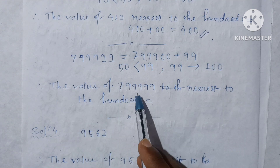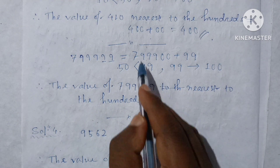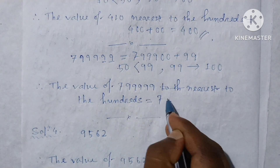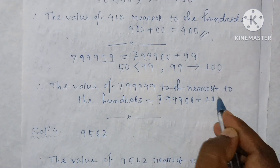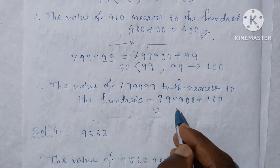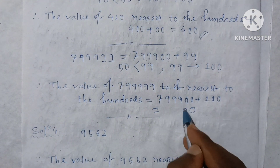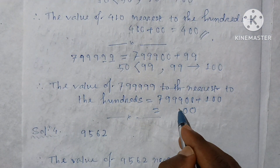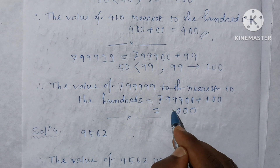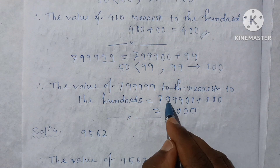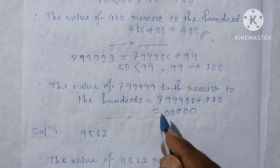So the value of this number nearest to the hundred is 7000 plus 100, which equals 800. The value of 799 nearest to the hundred is 800.